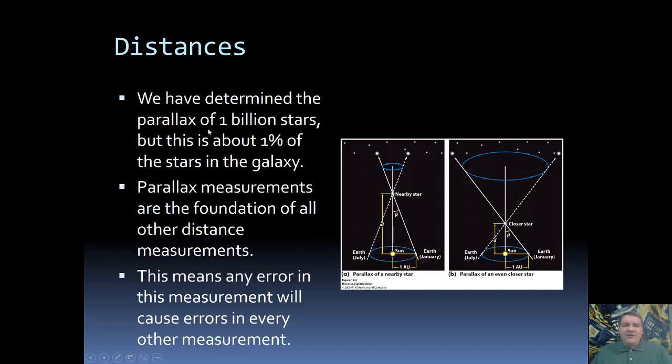We have determined the parallax of 1 billion stars. This has been done in the last five years because of the Gaia mission. And this is a really big number, a billion. However this is still only about one percent of all stars in our Milky Way Galaxy.